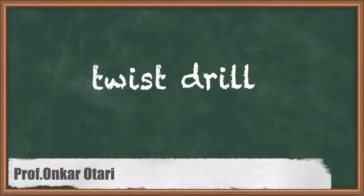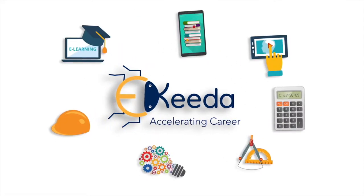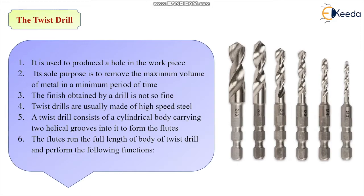Now students, let us go for the next tool, that is the twist drill. We have learned about the single point cutting tool. So we can have now the twist drill. You can see here in pictures, these are the twist drills showing their diameters. This is the 10 mm drill, this is 8 mm drill, this is 6 mm drill. These are the diameters of the drills, these are the twist drills.